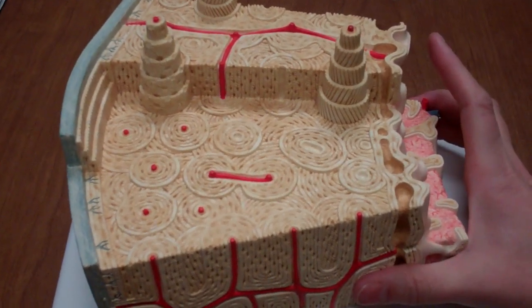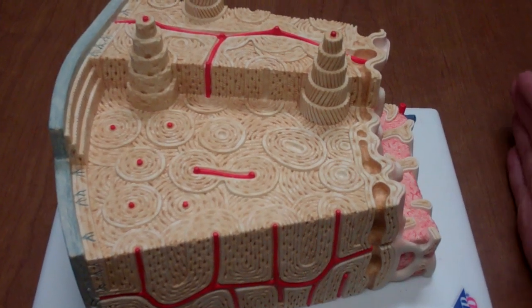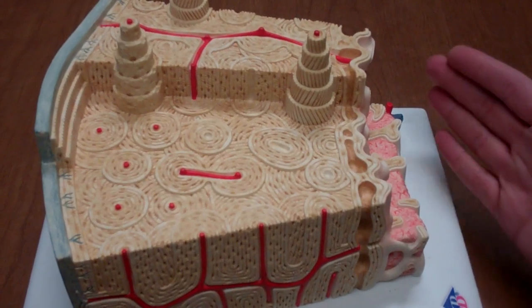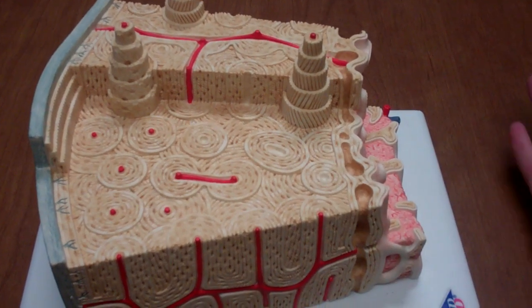So what I'm showing you here is our model for compact bone, spongy bone. This is one of our connective tissues that are known as our specialized connective tissues.